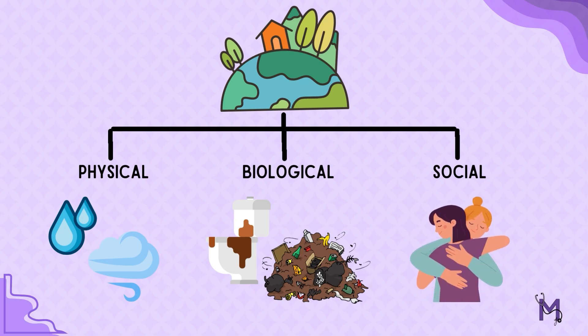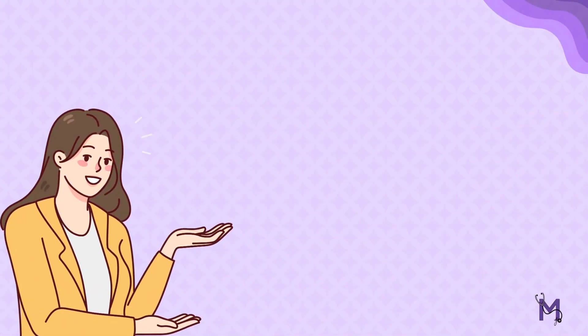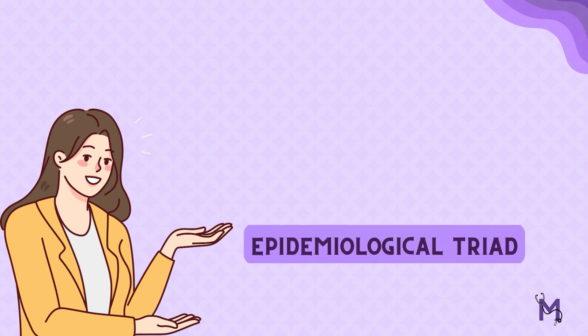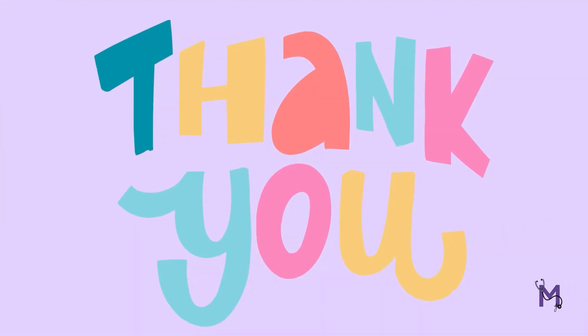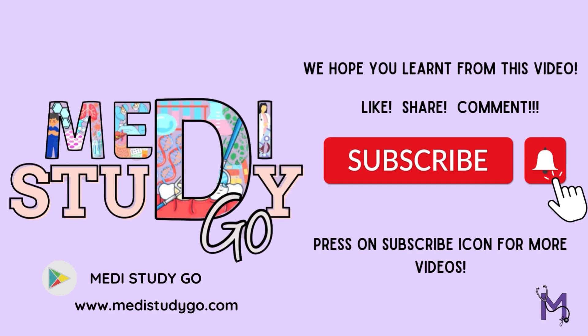Thus, the takeaway point should be that the epidemiological triad is significant since it acknowledges the role of the host and their immediate surroundings alongside the role of an agent, rather than only considering the agent as the cause of a disease.